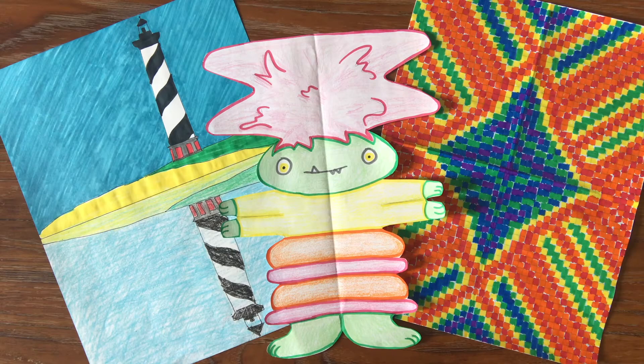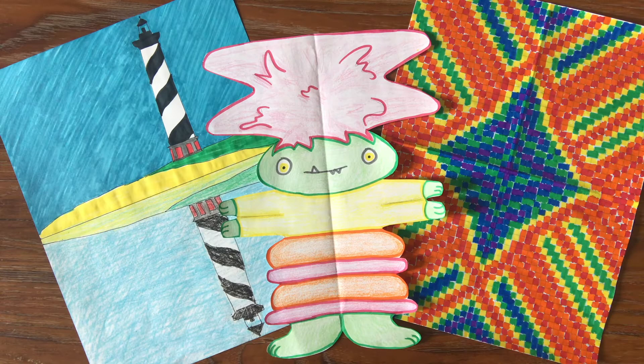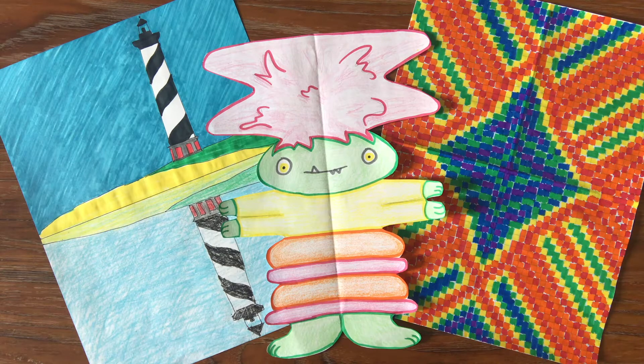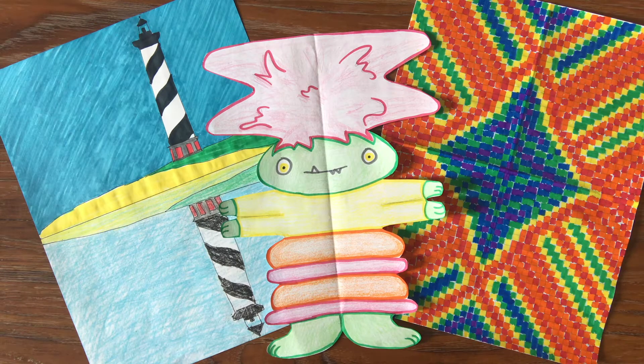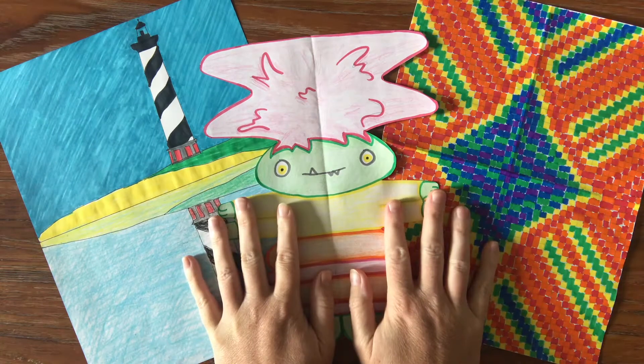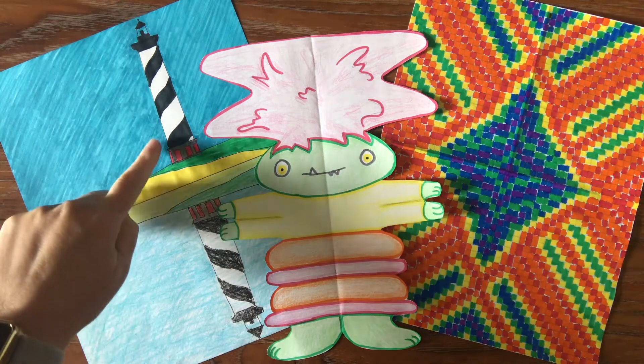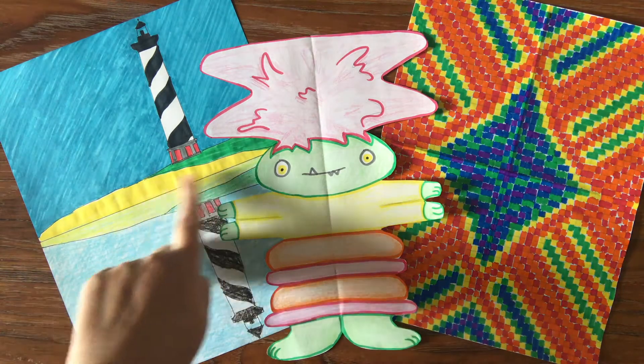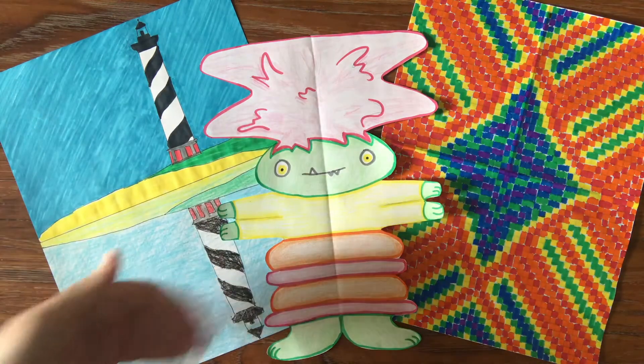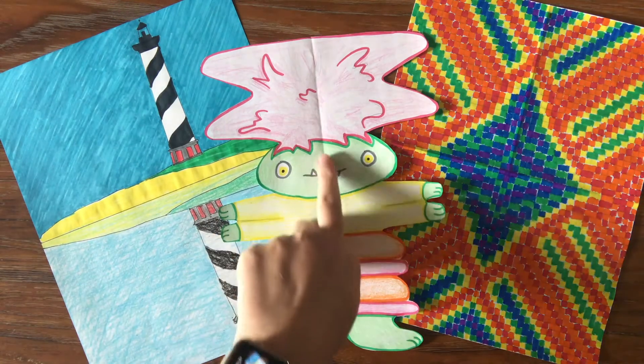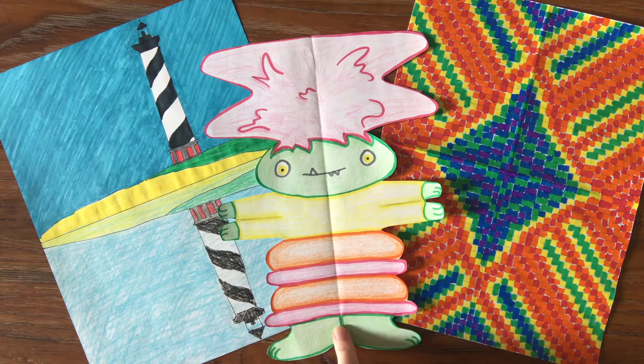All right, so since we learned about symmetry and reviewed that last week, this week we're going to start making some of our symmetrical artwork. You have three options of what you can do. You only need to pick one. We have our lighthouse and its reflection into water, so it's showing symmetry that way. We have a little symmetrical name monster.